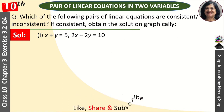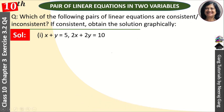First of all, we need to know what consistent means. Consistent means that these two lines, whose equations we have been given, need to have a solution. It means that x and y have values which will satisfy both equations. Inconsistent means no common solution — no solution.